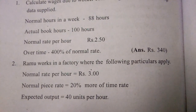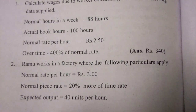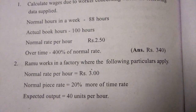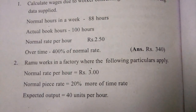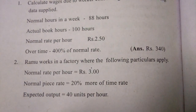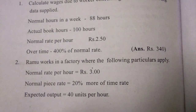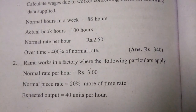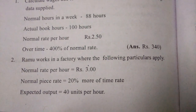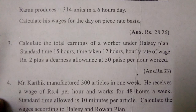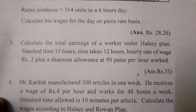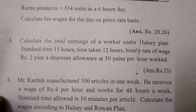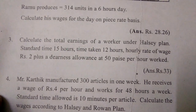Overtime: 400 times of normal rate, so that equals 340 rupees. Second one: Ramu works in a factory where the following particulars apply. Normal rate per hour: 3 rupees, normal piece rate: 20% more of time rate, expected output: 40 units per hour.